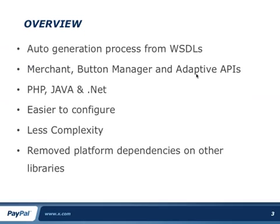Today we're going to talk about these new SDKs that we're deploying. We're using an auto-generation process from our existing WSDLs — web service description language — which is basically an XML file that explains all the objects that help construct an API call for PayPal. We're using these to auto-generate SDKs for our merchant APIs, which include express checkout, direct credit card processing, button manager, and all of our adaptive APIs.